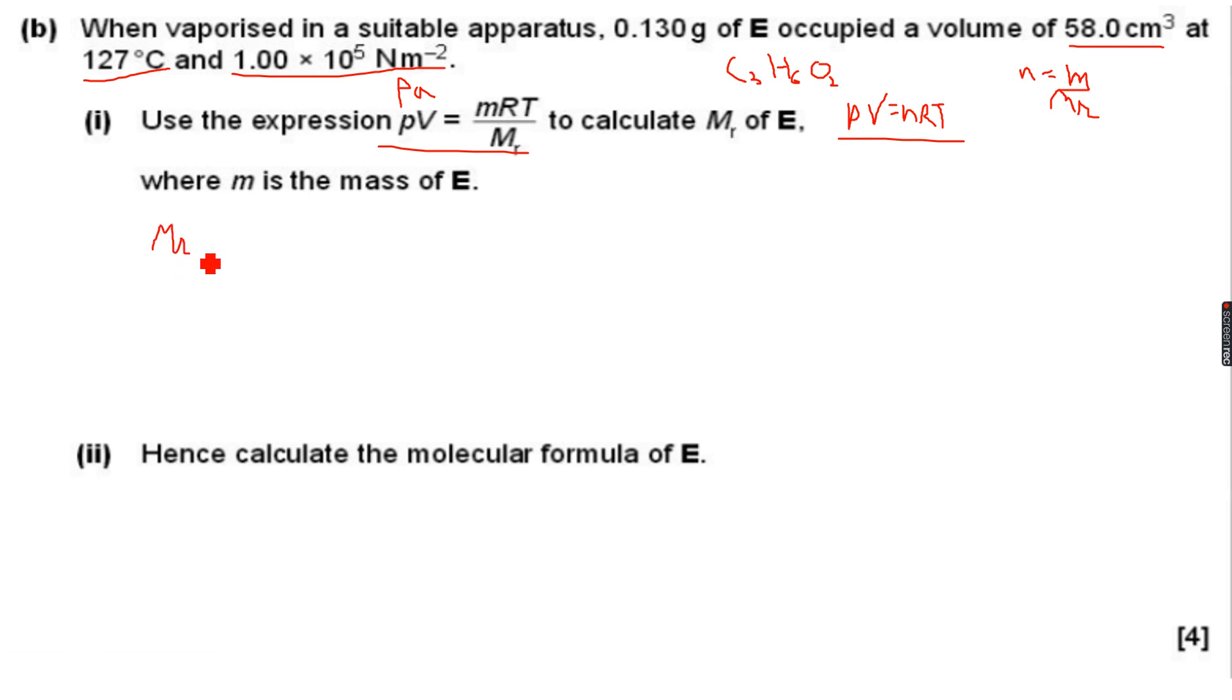So MR is equal to MRT over PV. M over here is equal to 0.13, that's what we have given. R is equal to 8.31, it's a constant. T is equal to 127 degrees Celsius. Now remember, T is always in Kelvin, not degrees Celsius, so this will be 127 plus 273. P is equal to 1 times 10 to the power of 5 multiplied by V which is 58 centimeter cube.